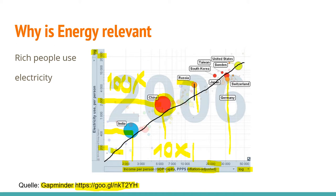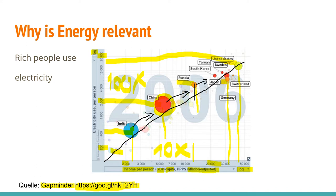This gives us a first feeling that electricity seems to be a very relevant factor for developing countries. In the future we will see more and more countries going from the lower part of this chart toward the top — getting richer and using more and more electricity per person.